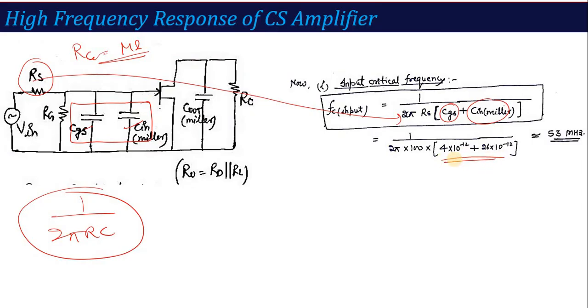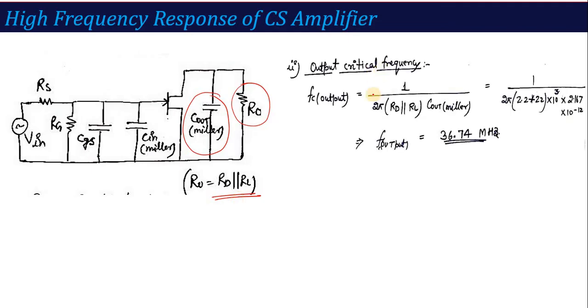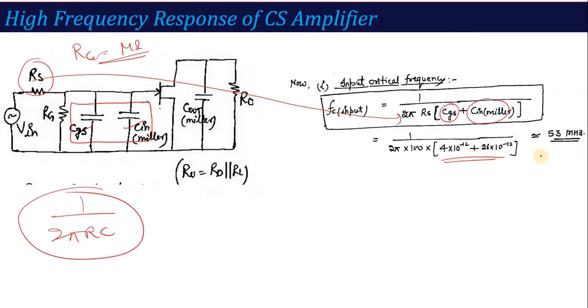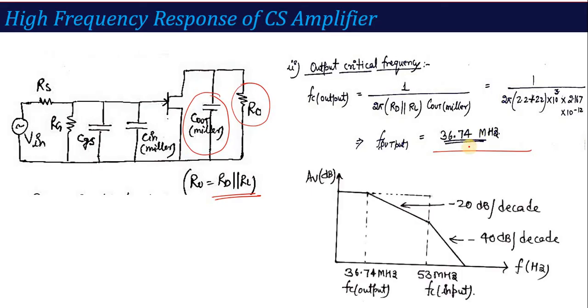Similarly, if I talk about output frequency response, what is in the output circuit? That is simply 1 over 2π RC. The output side is C_out Miller and the resistance is R_D parallel with R_L. Here we apply the same formula: 1 over 2π RC, where R is R_D parallel R_L and C is C_out Miller. Put the value, get the result. Once you calculate both frequencies, one has 53 megahertz, one has 36.74 megahertz.